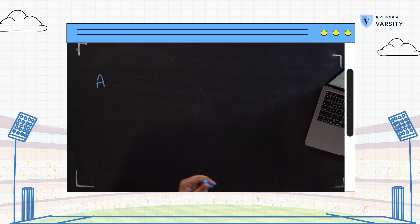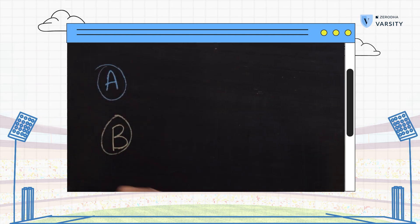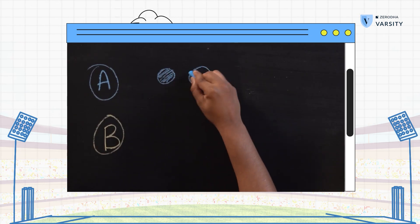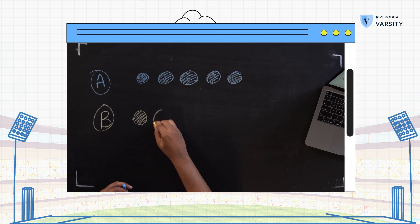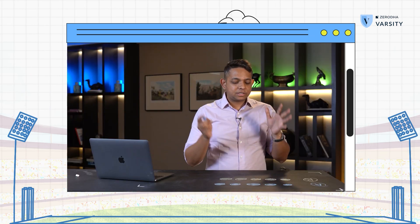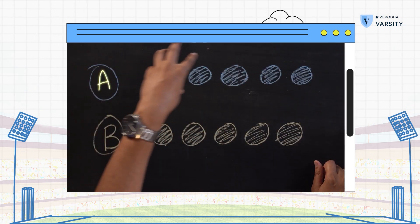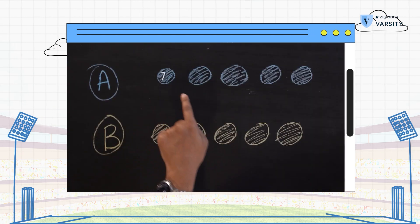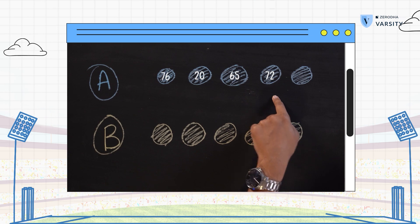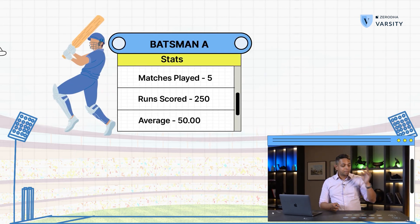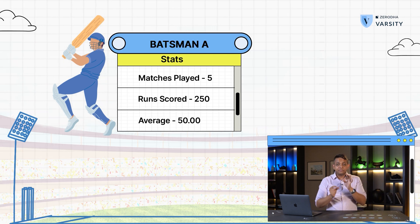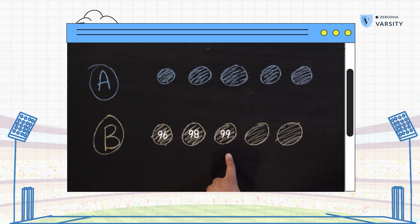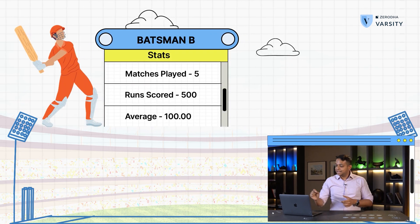Let's imagine there are two batsmen, batsman A and batsman B, and both of them play five matches each. Batsman A scores 76, 20, 65, 72, and 17 runs, which brings us to an average of 50. So batsman A's first five matches gives him an average score of 50. Batsman B on the other side scores 96, 98, 99, 87, and 120. His average is 100. So what we have here is a five match average.